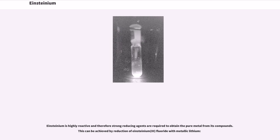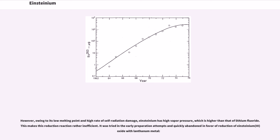Einsteinium is highly reactive and therefore strong reducing agents are required to obtain the pure metal from its compounds. This can be achieved by reduction of Einsteinium-3 fluoride with metallic lithium. However, owing to its low melting point and high rate of self-radiation damage, Einsteinium has high vapor pressure, which is higher than that of lithium fluoride. This makes this reduction reaction rather inefficient. It was tried in the early preparation attempts and quickly abandoned in favor of reduction of Einsteinium-3 oxide with lanthanum metal.